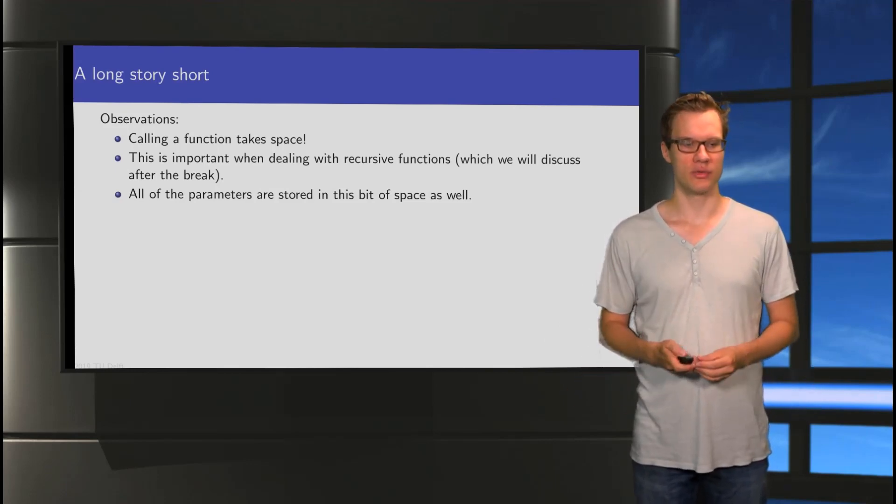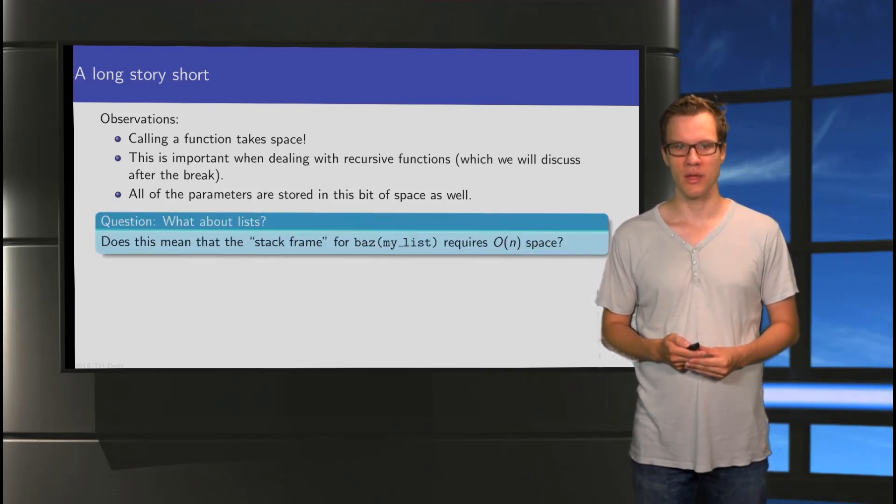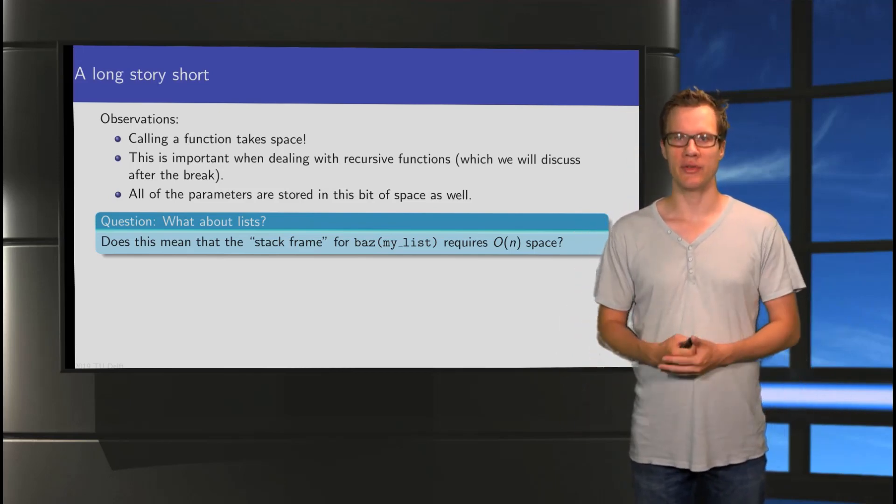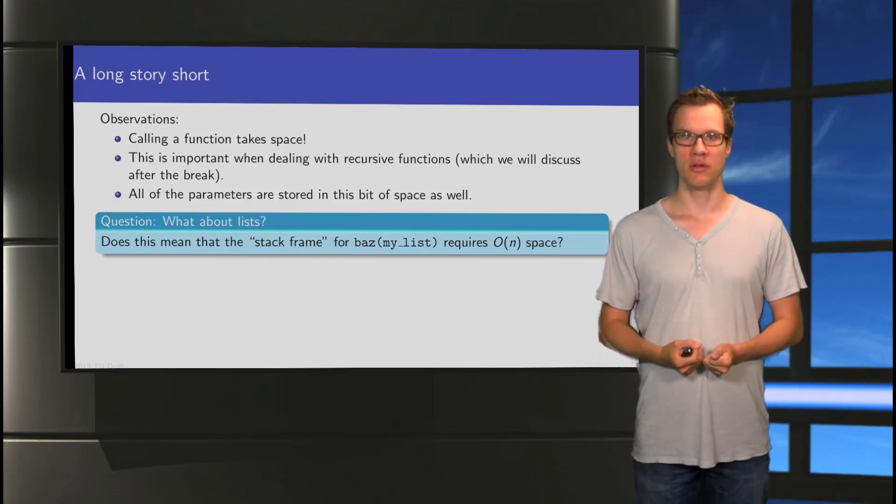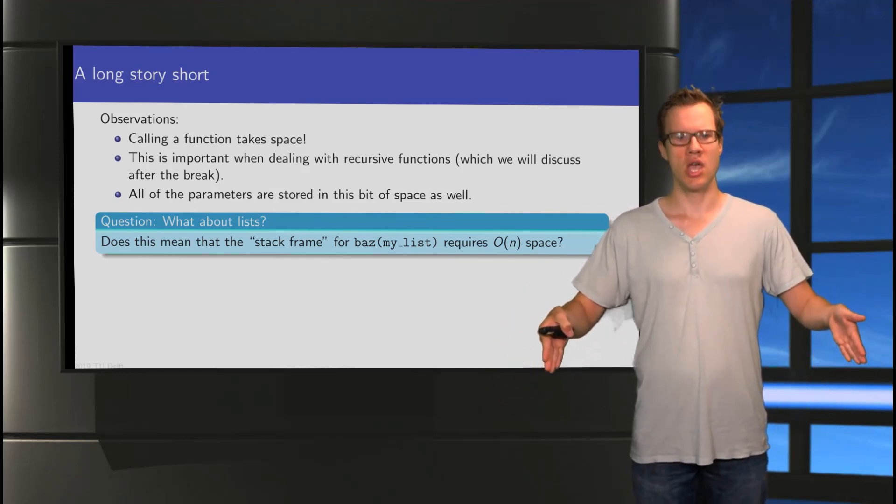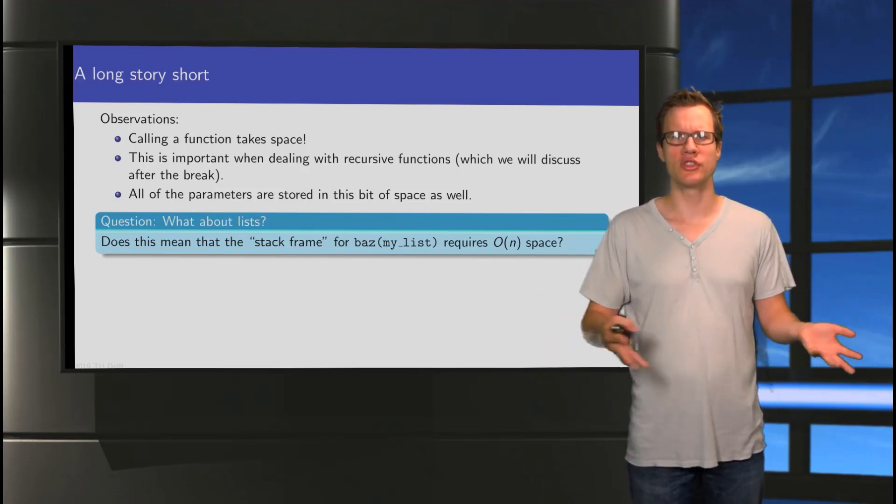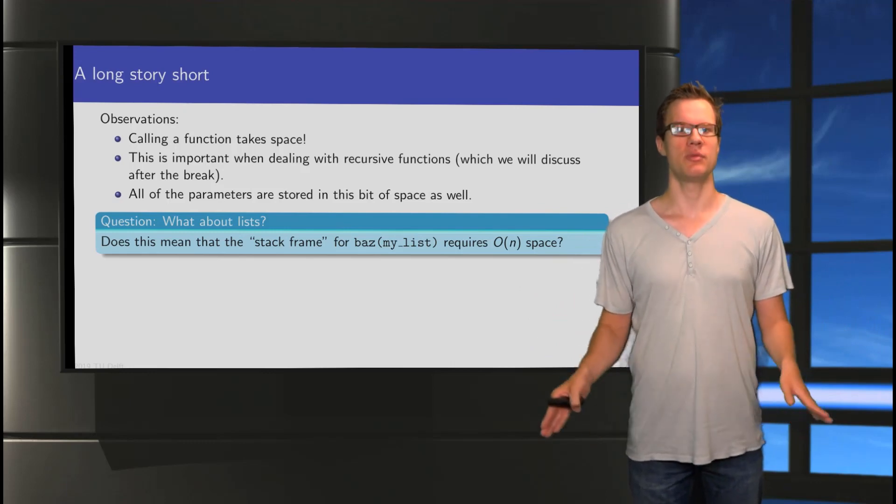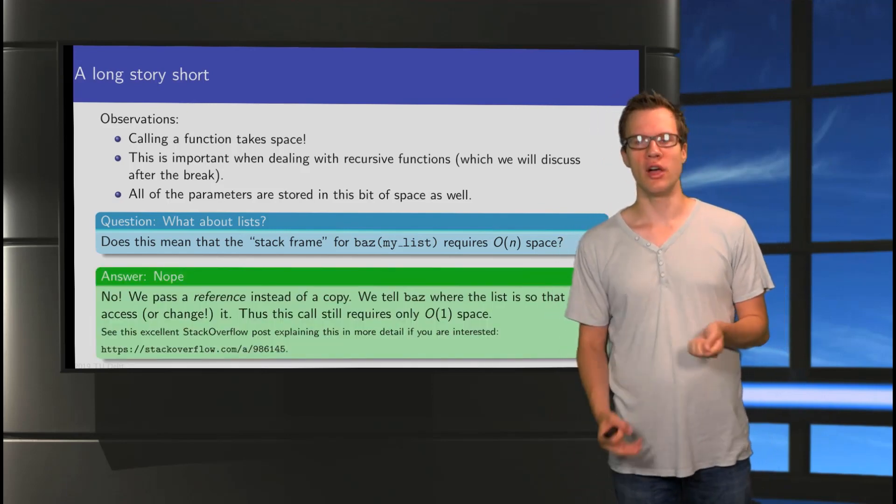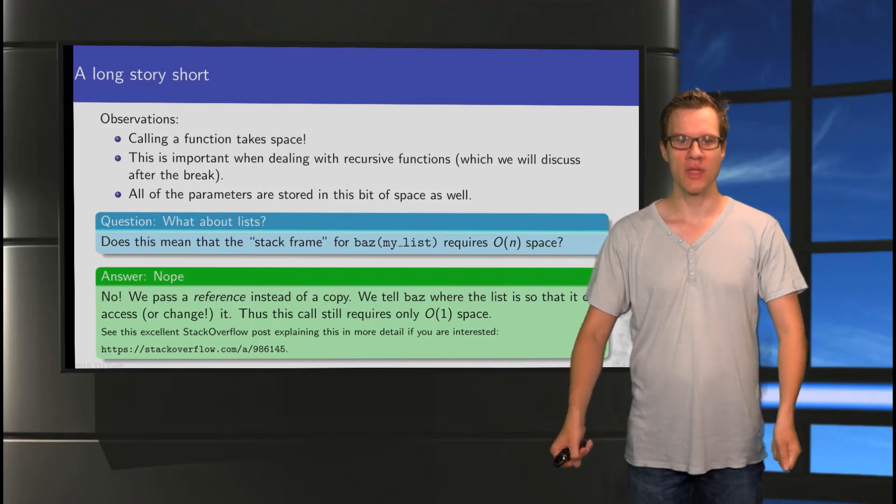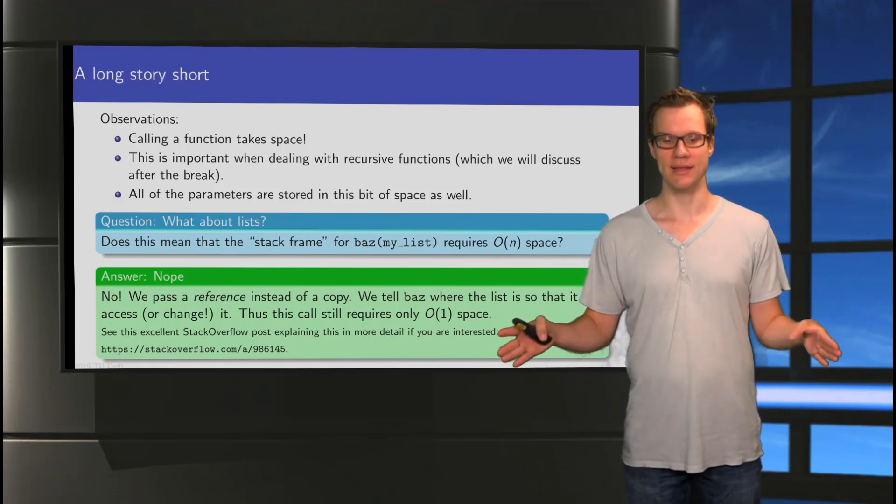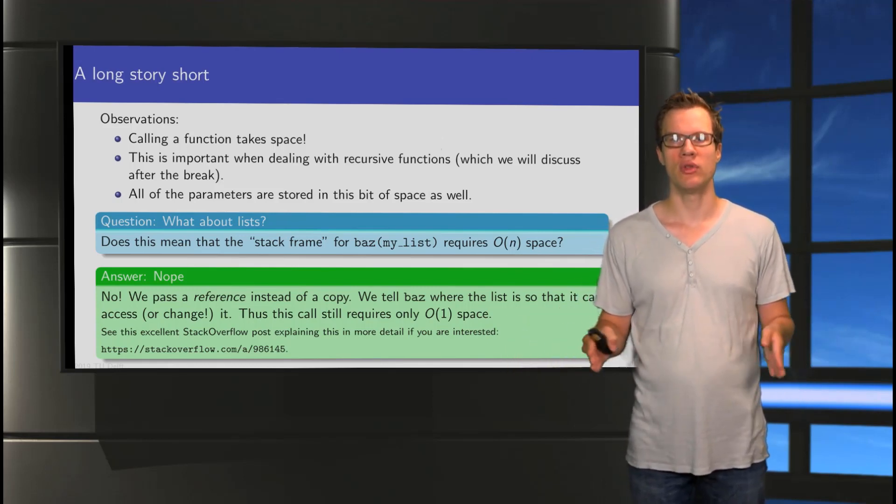And then there is one question I would still like to address before we finish this video. Which is, well, does that mean that if I call a function, let's call it baz, and I give it a list as a parameter, does that require linear space? Because a list, well, if a list has n items, we need to store all of them, so the list would take n space. But does it mean that if I call a function with a list, the stack frame then requires linear space? That would be terrible, right? Well, fortunately, that's not the case.